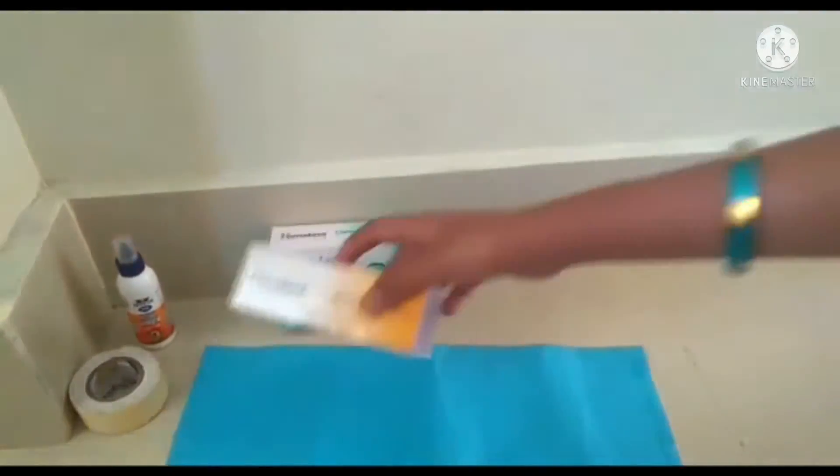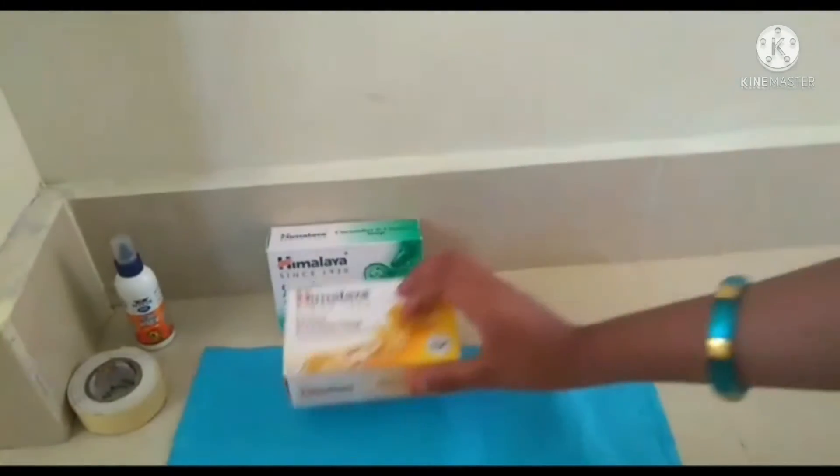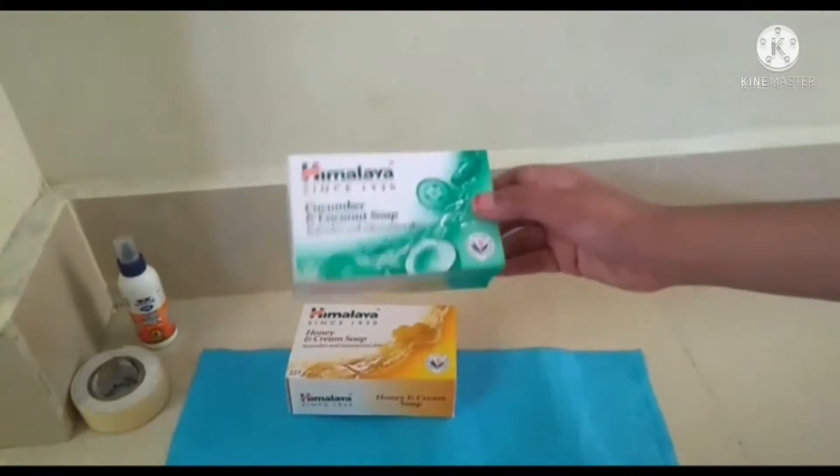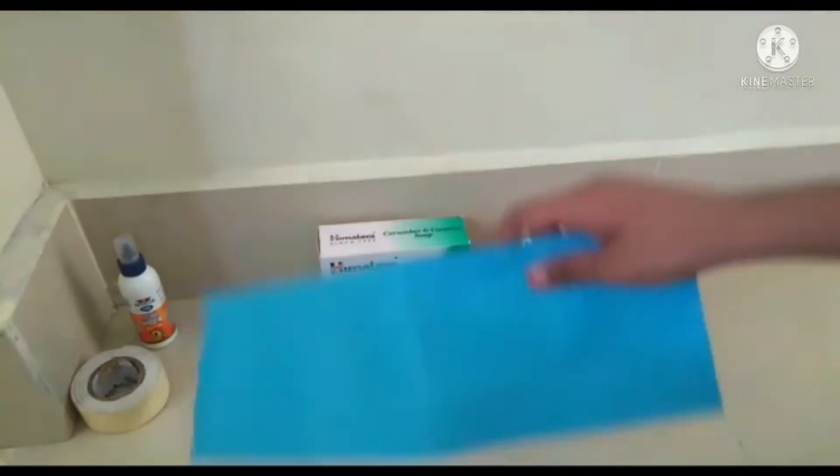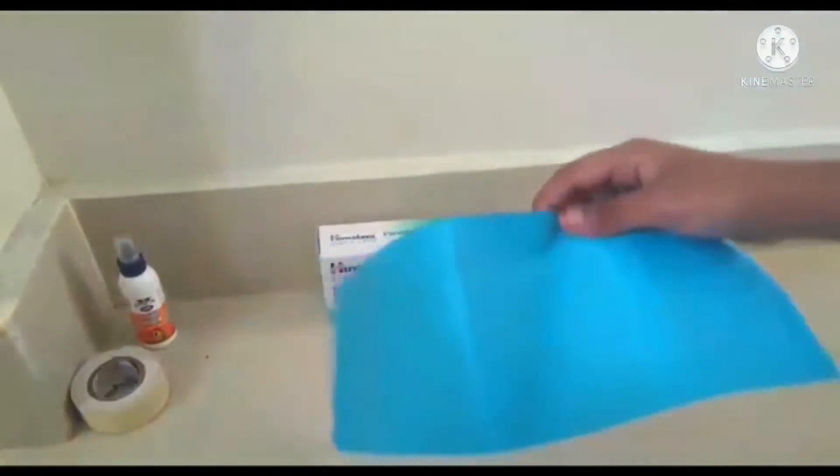Now we are going to make a pen stand. We'll need double-sided tape, soap boxes, and color paper.